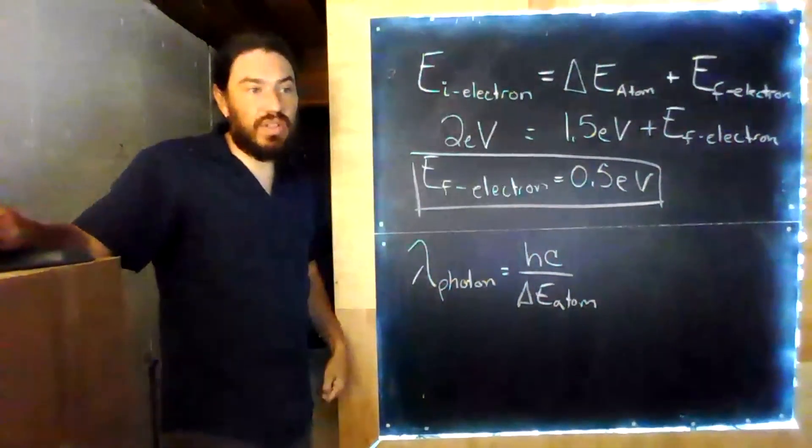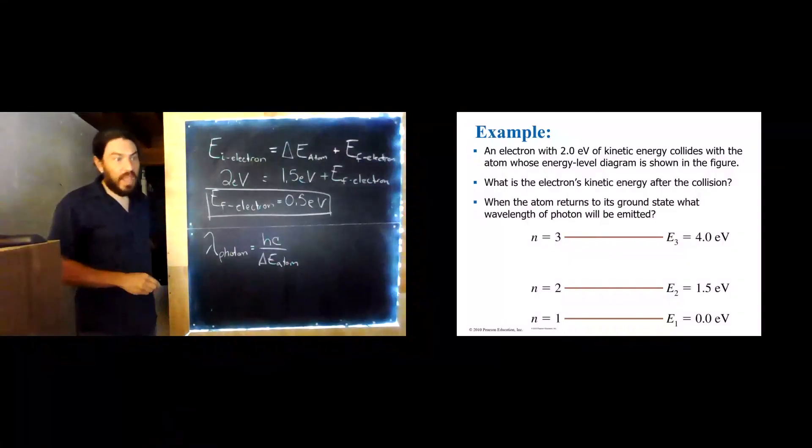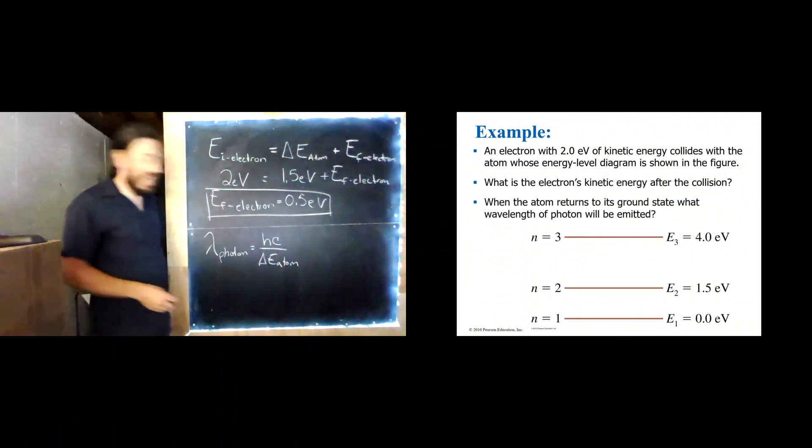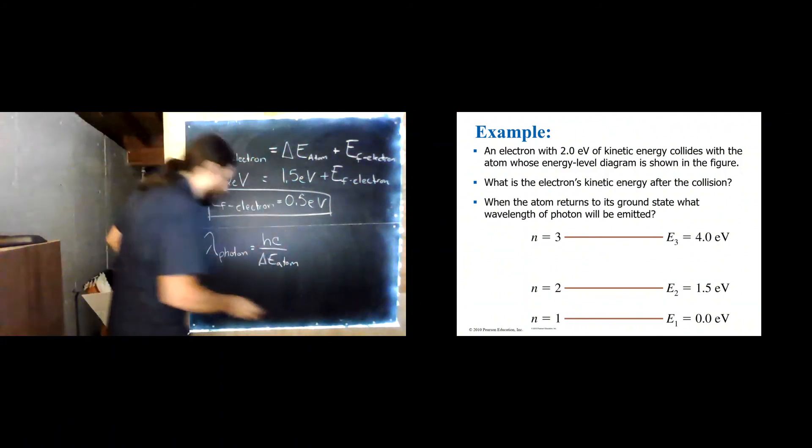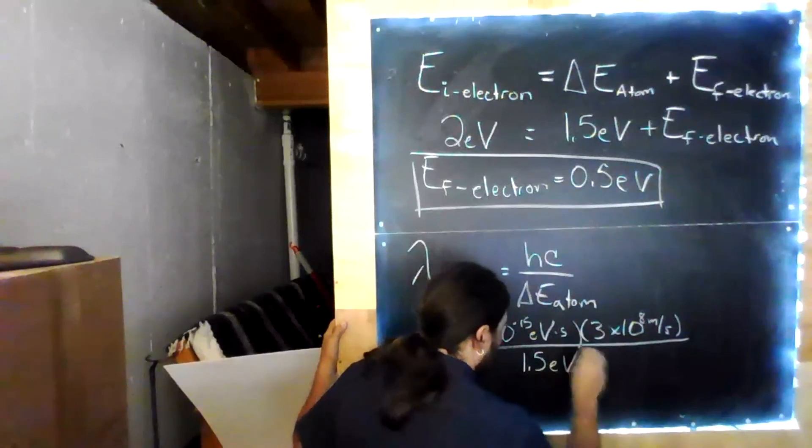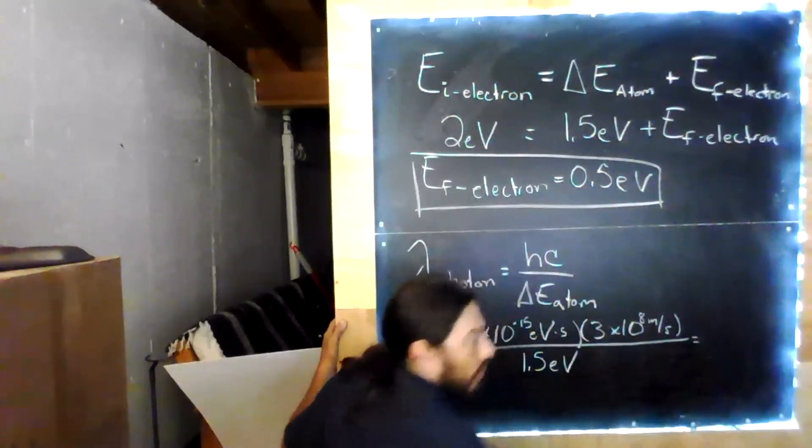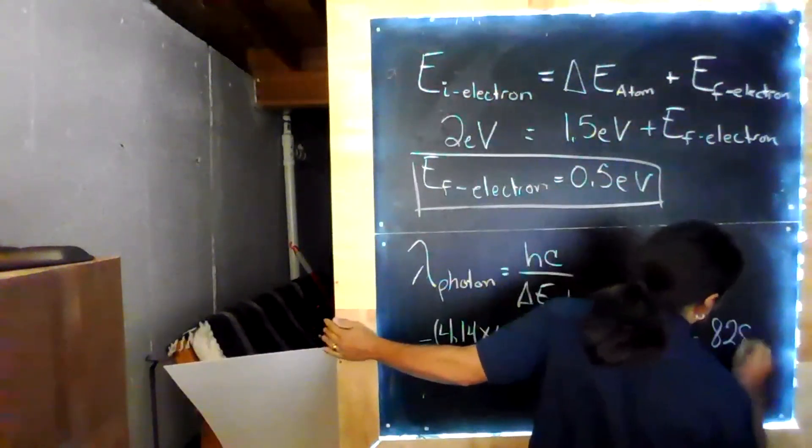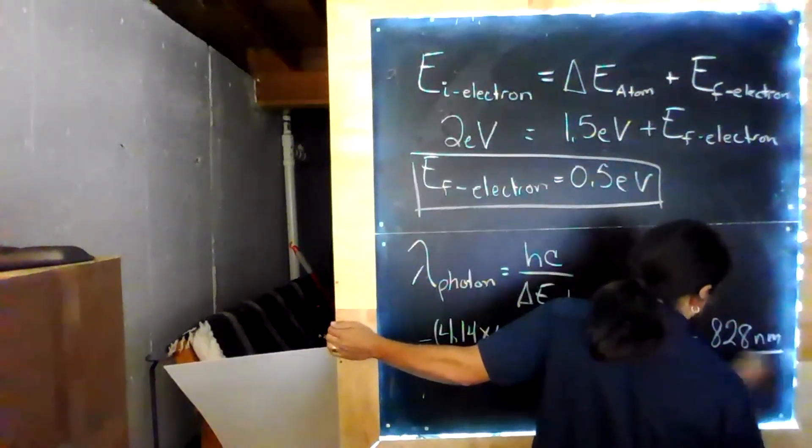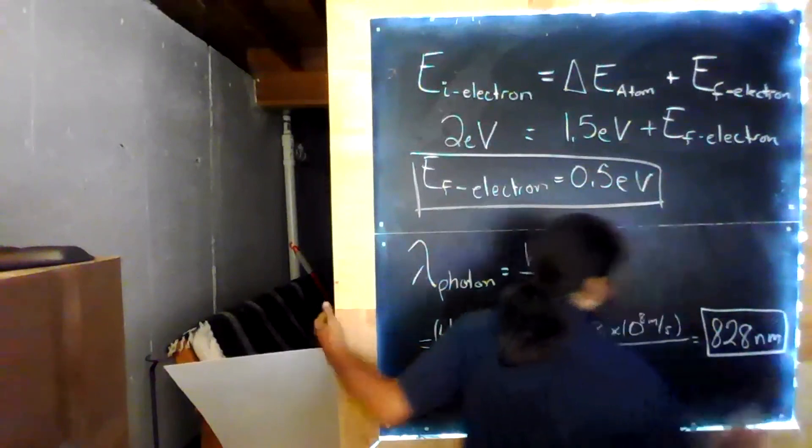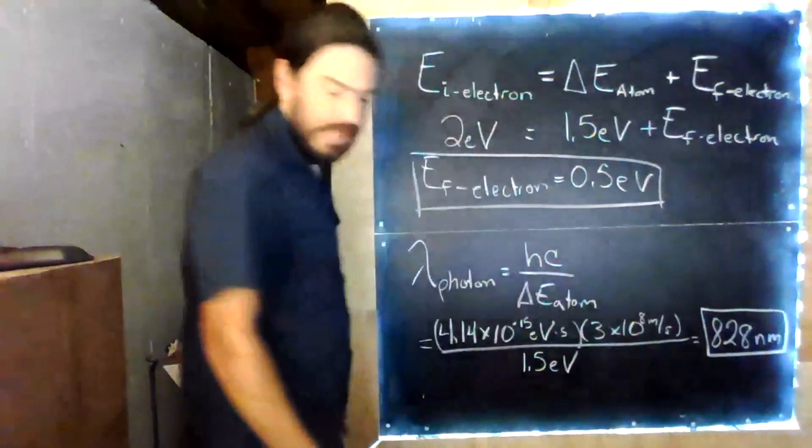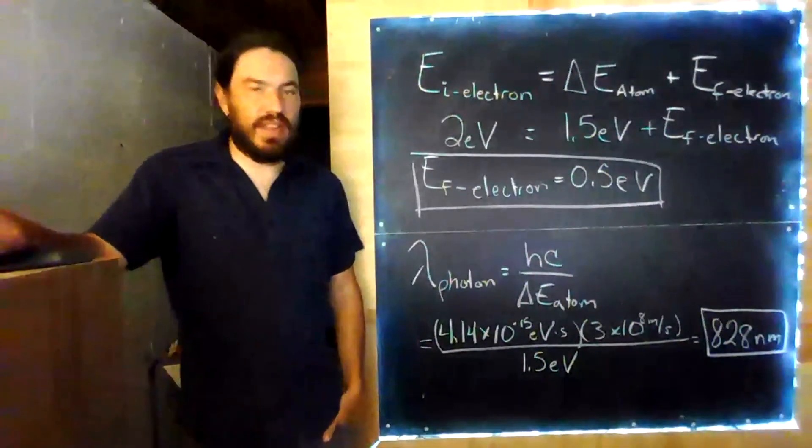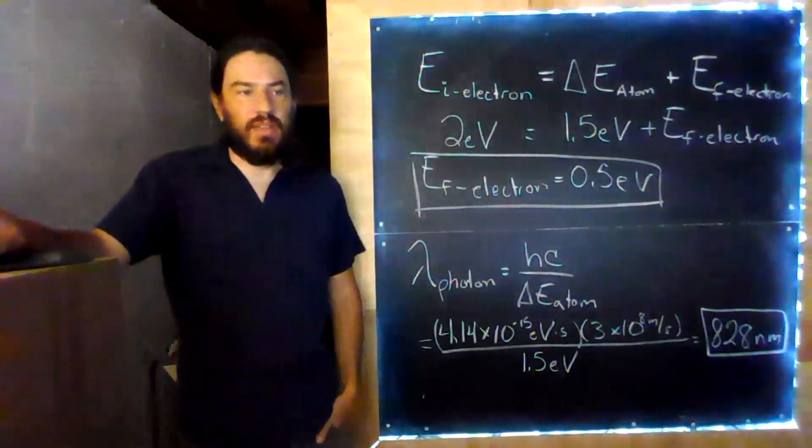And so I'll go ahead and plug in my h in electron volt seconds, and we can just do this calculation. And we run our calculator, and we get 828 nanometers, so that's just outside the visible range.